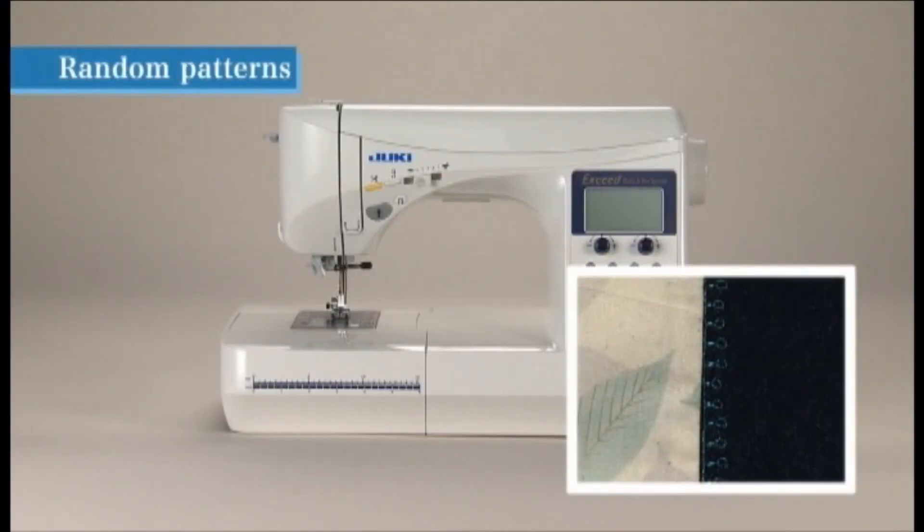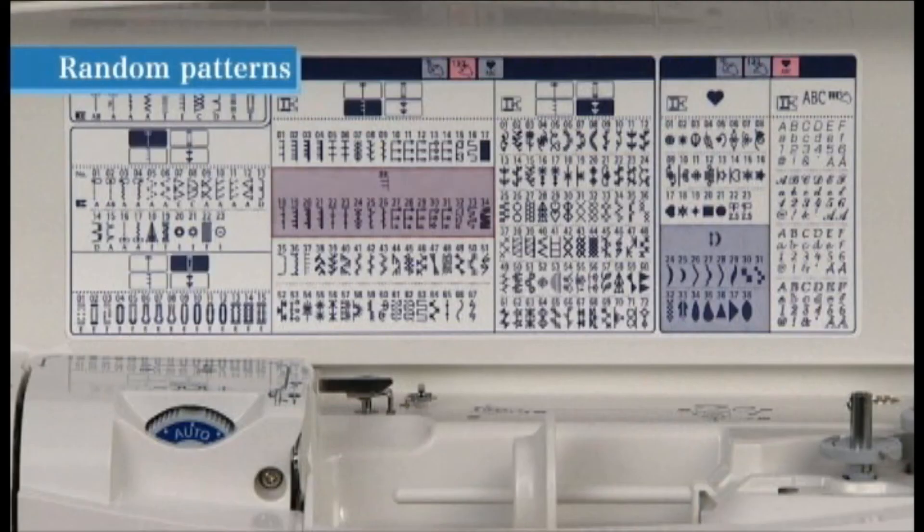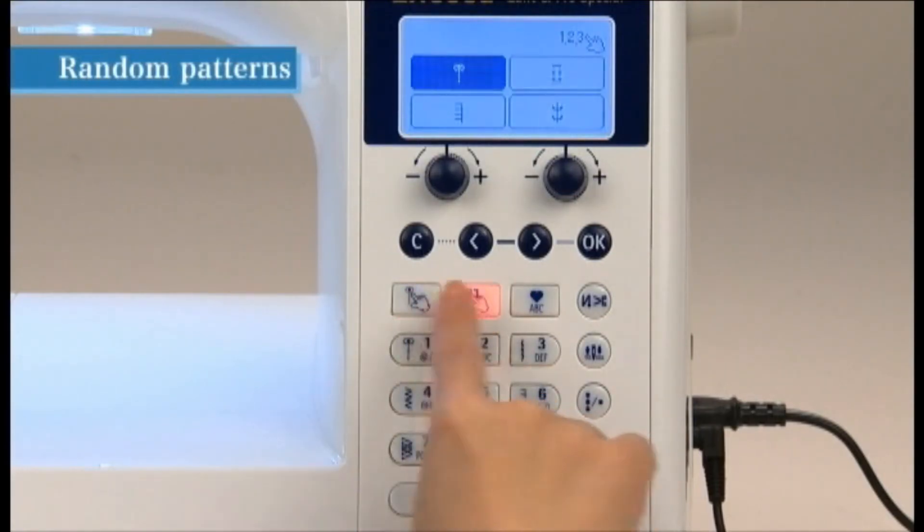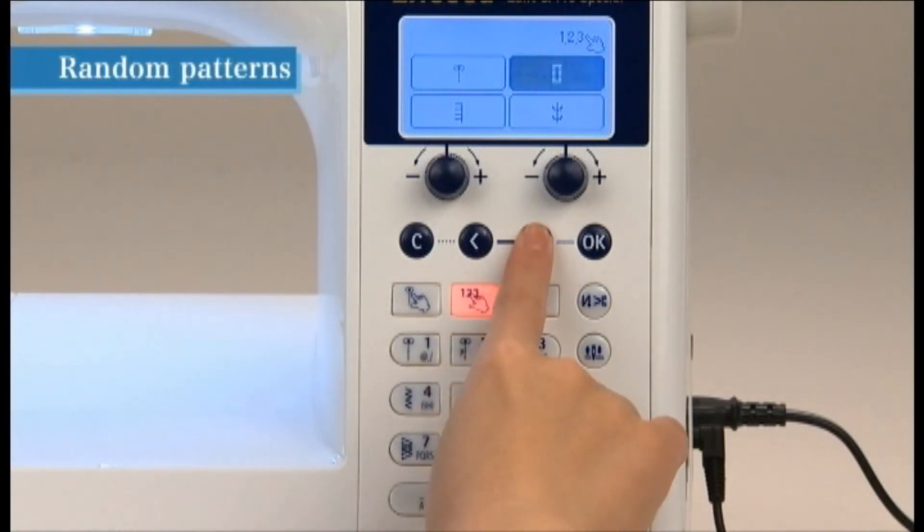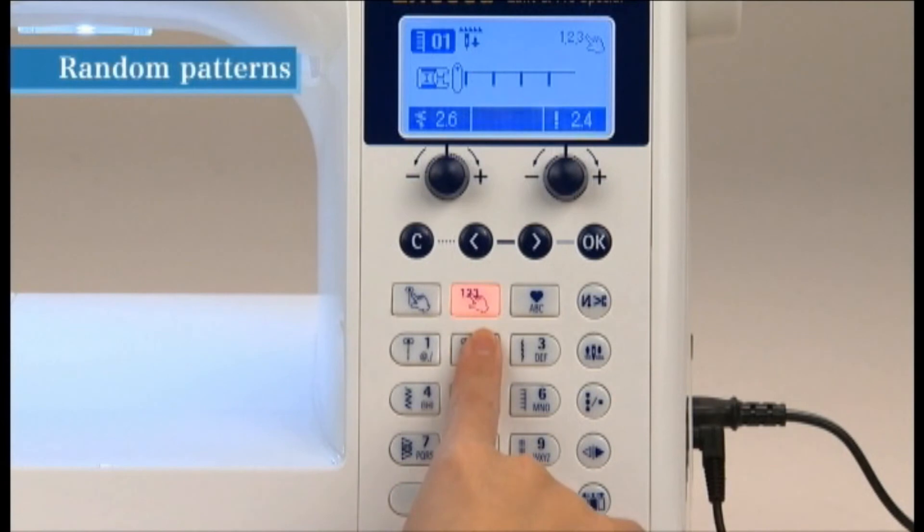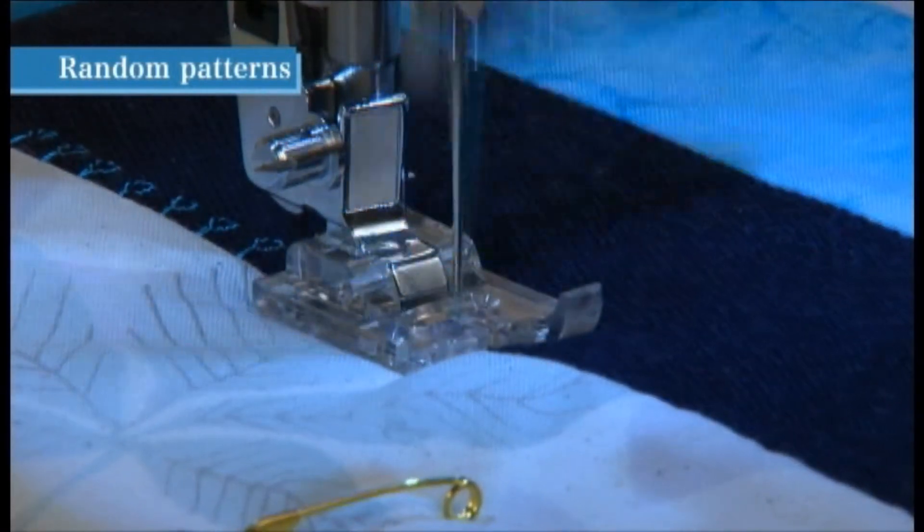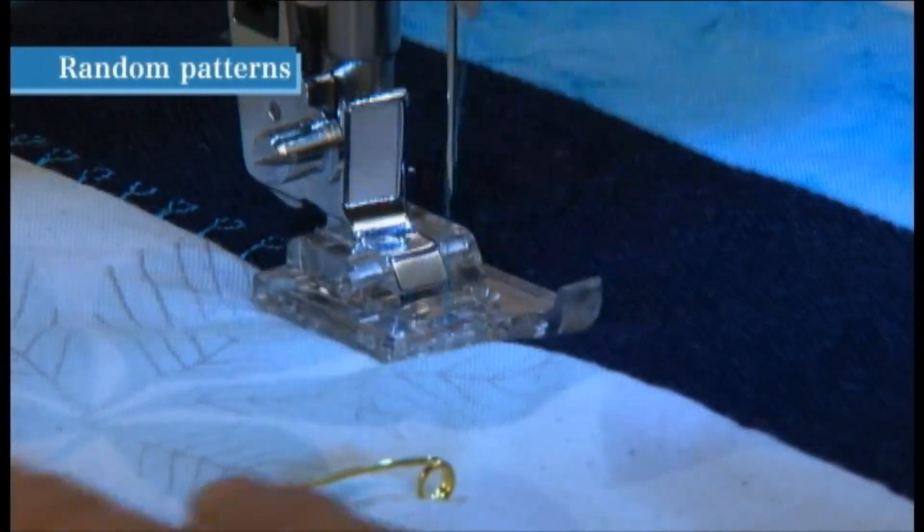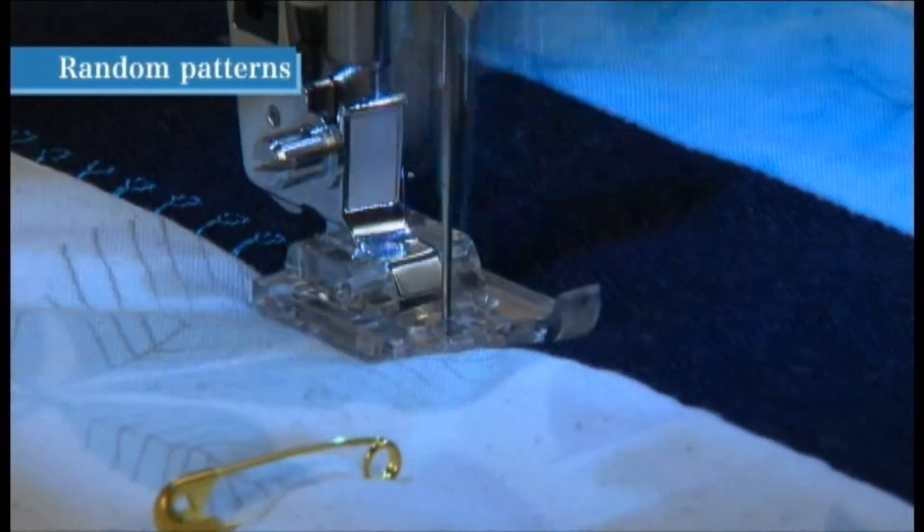Quilting patterns numbers 18 to 34 are random stitch patterns. These playful patterns vary the width of each stitch automatically. Select quilting pattern number 27. Use the presser foot I. These patterns give a decorative look to the junctions of crazy quilts and patchworks, for example.